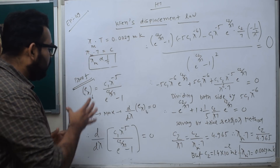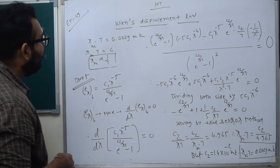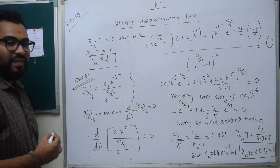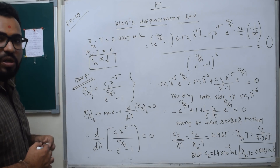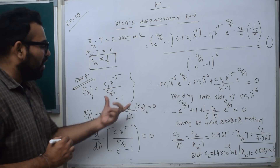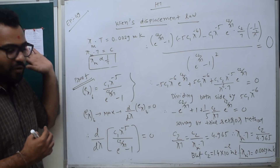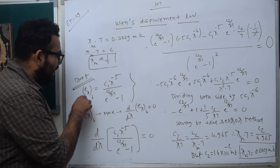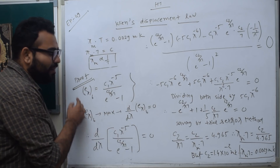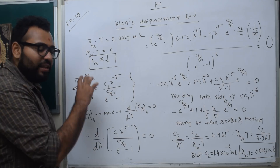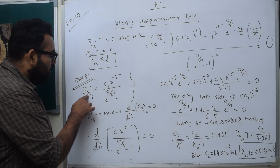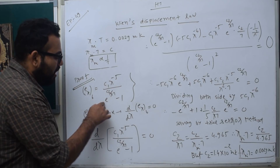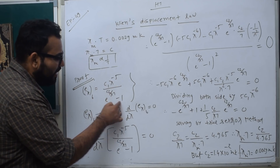To do this proof, you can refer to episode 47 and episode 48. In episode 48, the spectral power of a black body is equal to C1 times λ raised to minus 5, upon e raised to C2 upon λT, minus 1.